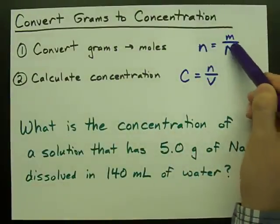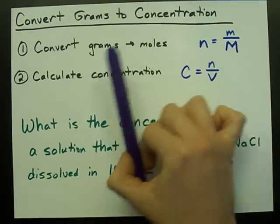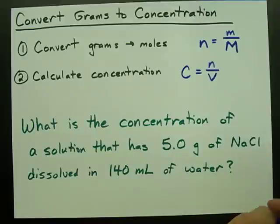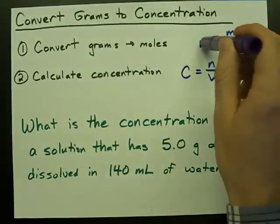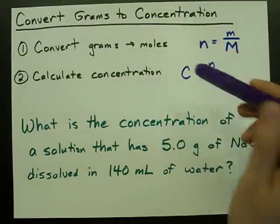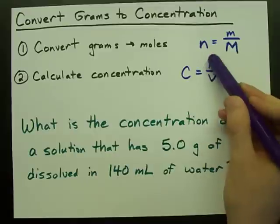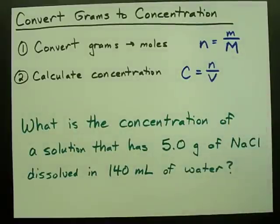The number of moles is the mass divided by the molar mass. Then you use that amount in moles to calculate the concentration, because the concentration is the number of moles divided by the volume. So what is the concentration of a solution that has 5.0 grams of NaCl dissolved in 140 milliliters of water?